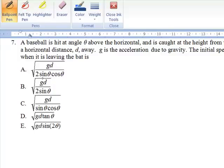gd over 2 sine theta cos theta, et cetera. So one of these is going to have to be right and all the rest are wrong. So we're going to have to just solve it. Let's start by drawing a diagram.